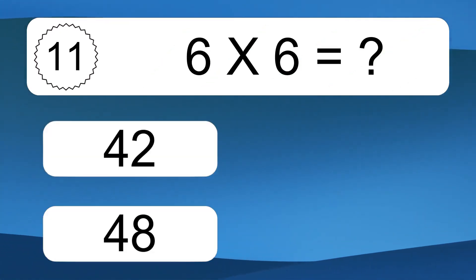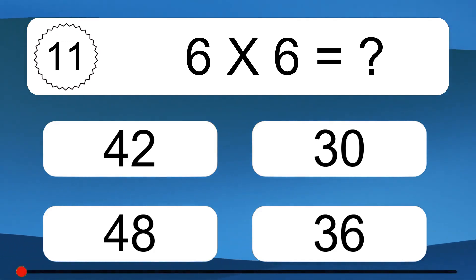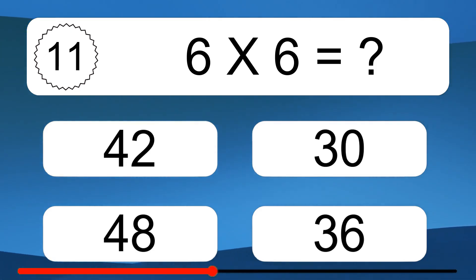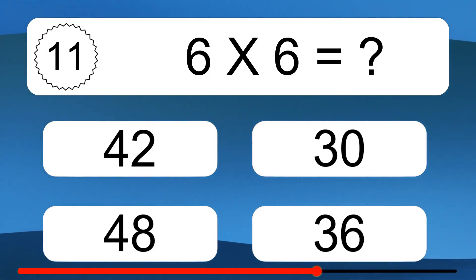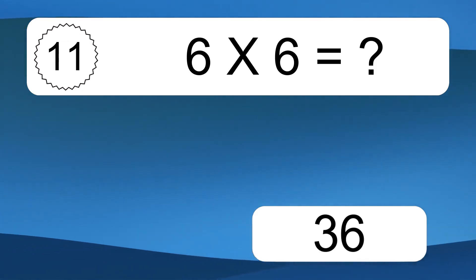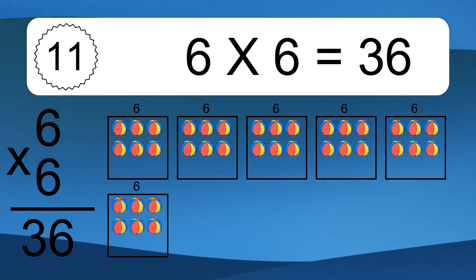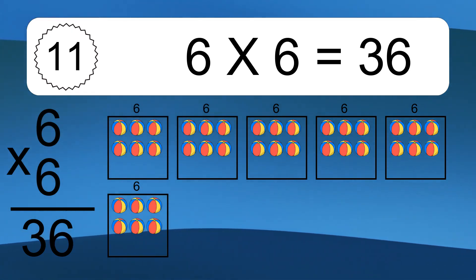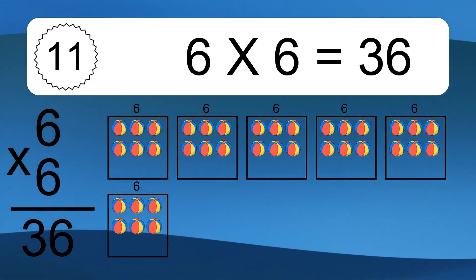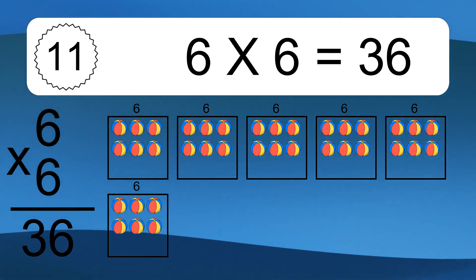Six times six equals what? Six times six equals 36. We have six boxes, and each box has six colorful balls inside. If you count all the balls in all the boxes together, you will have six times six balls. This equals 36 balls.